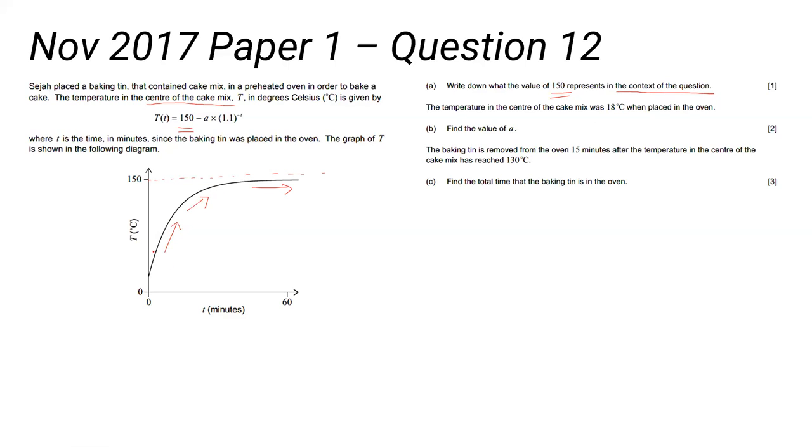But you need to pay attention to 'in the context of the question.' So you need to give an answer in the context of the question. This is the temperature—what does that asymptote mean about the temperature of the cake? So I'm not going to give you the wording for that.